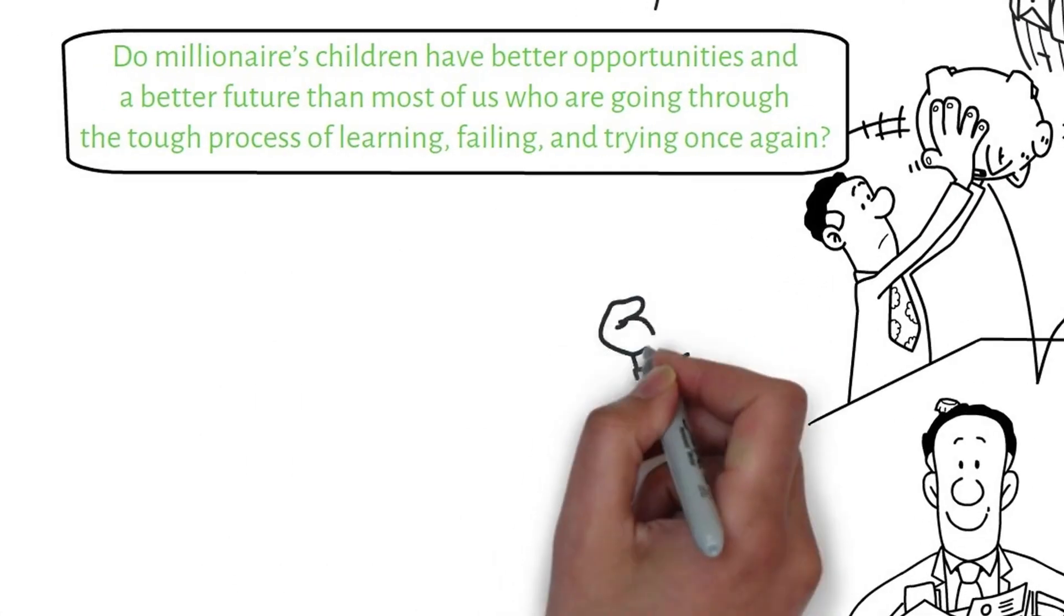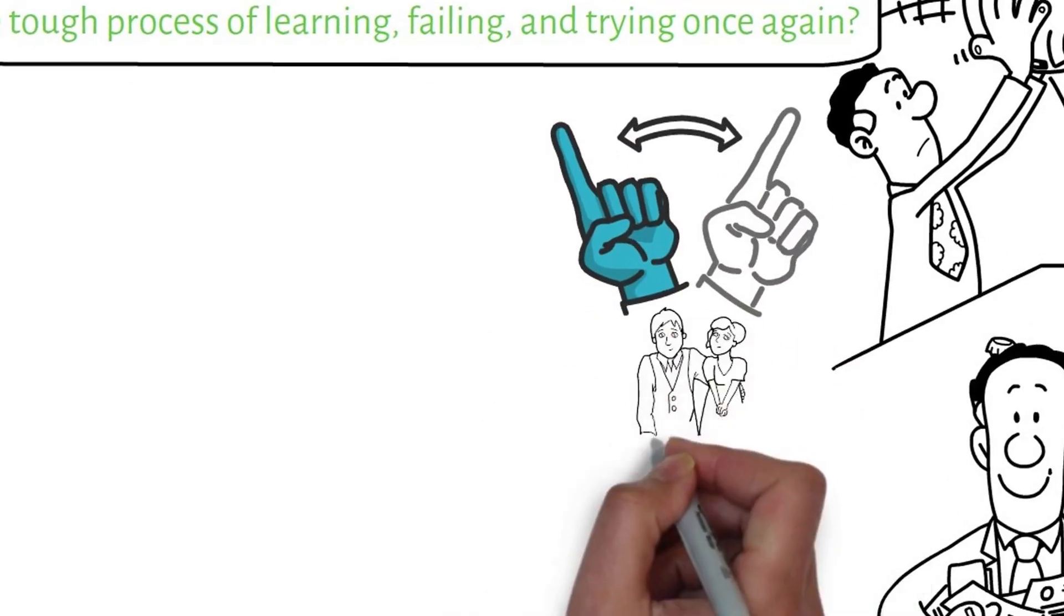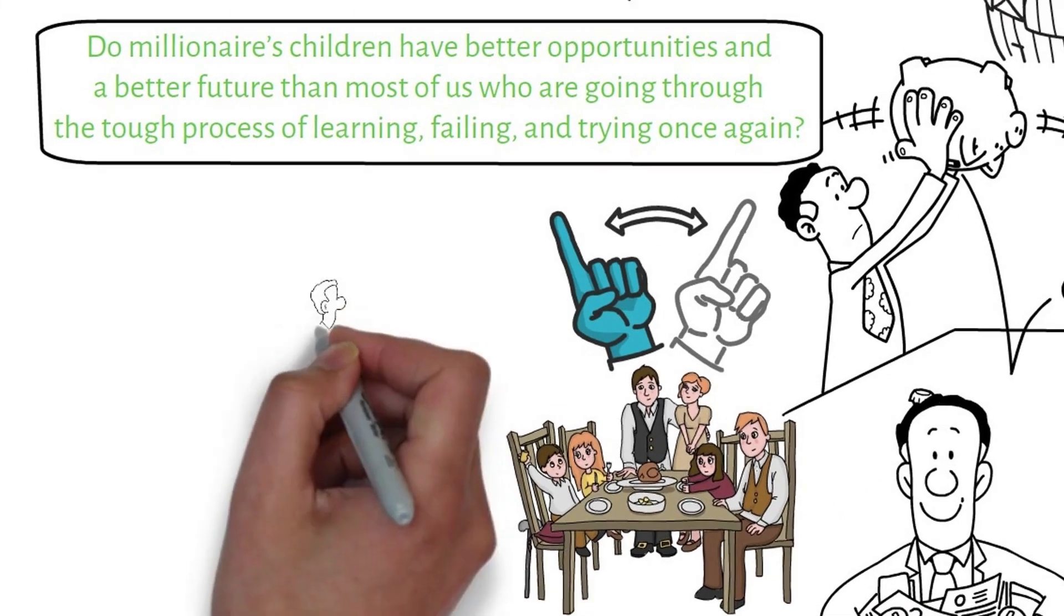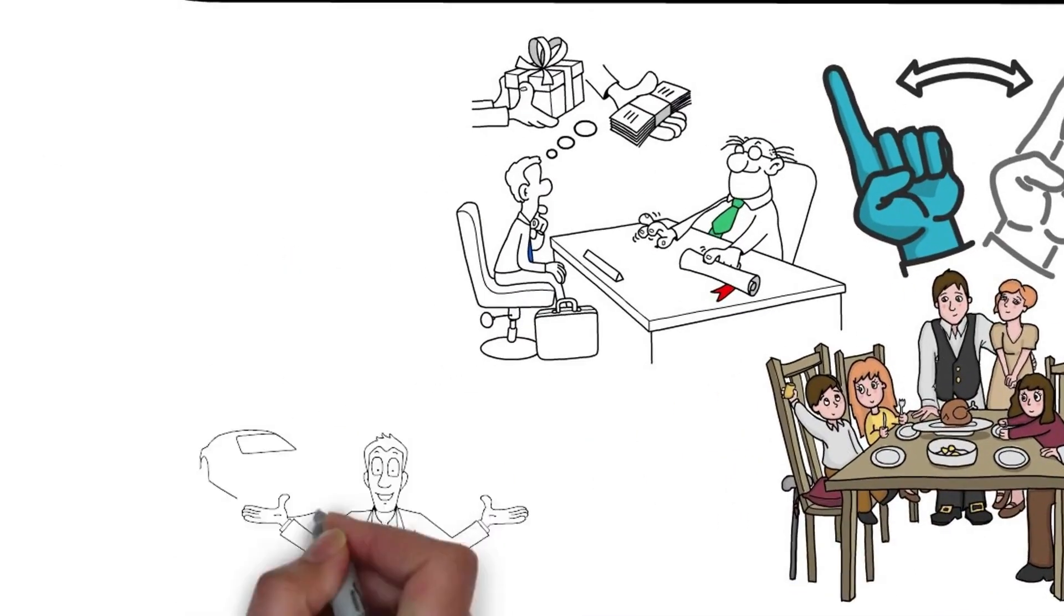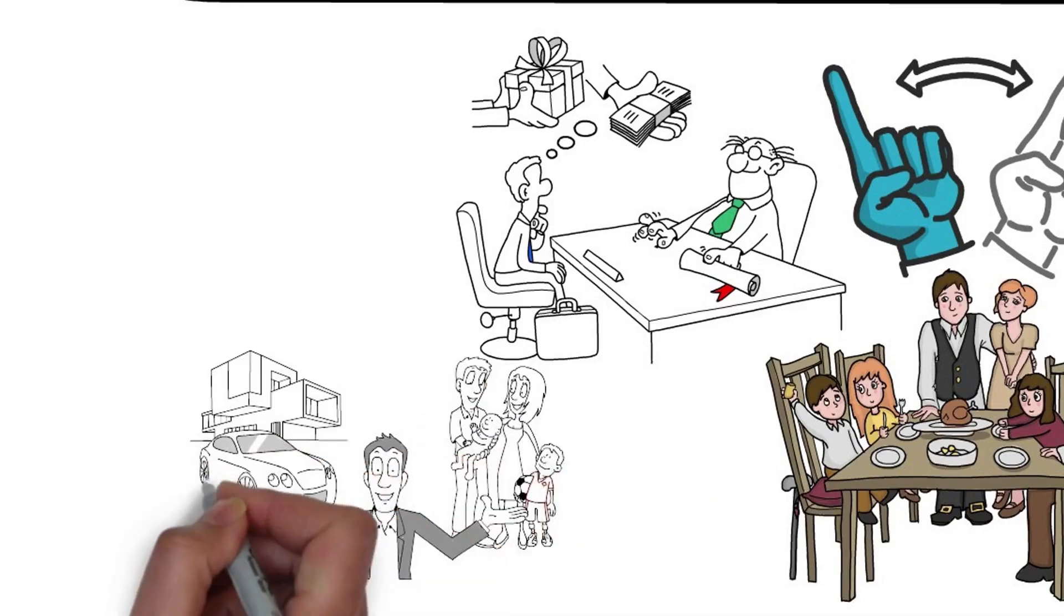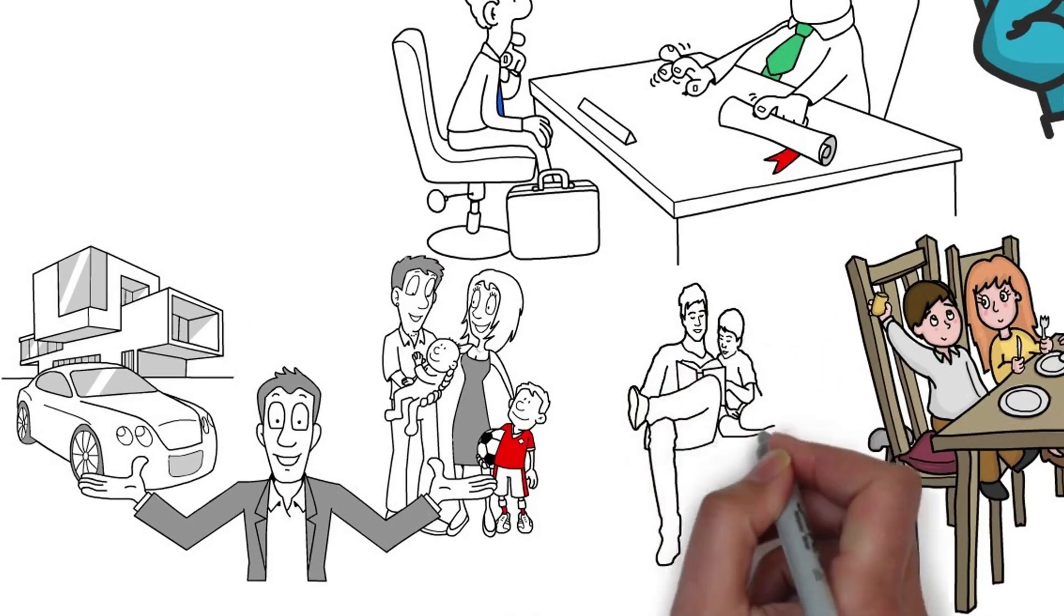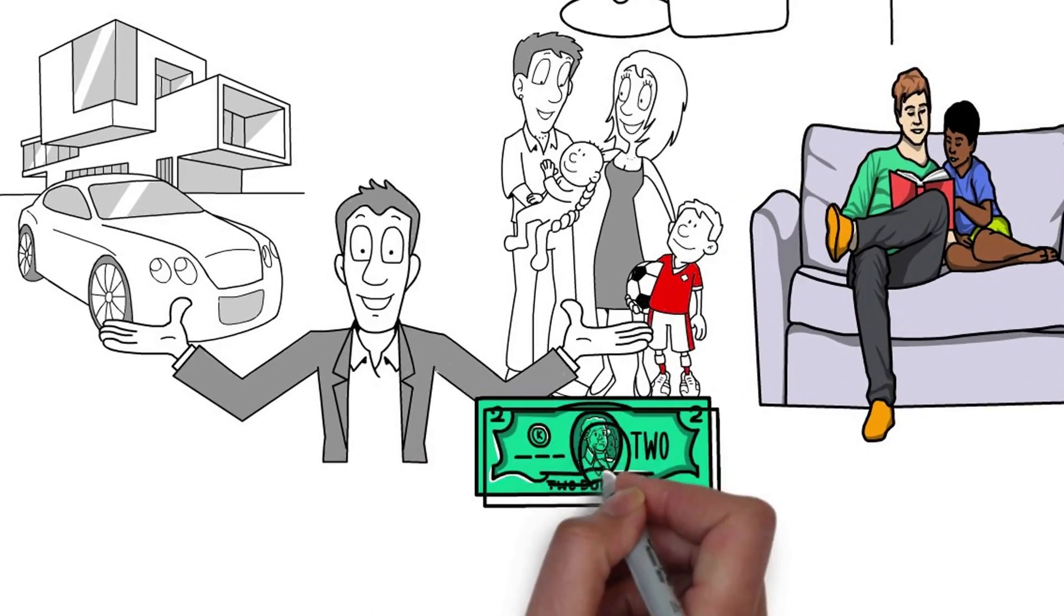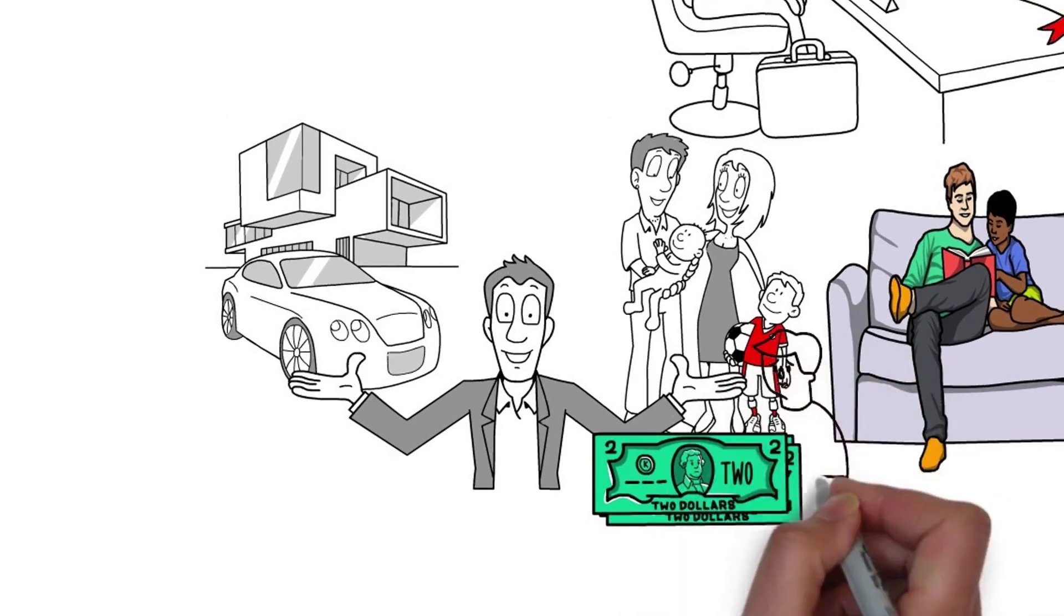It is easier to think that these children already have their future figured out just because their parents are sharing their wealth with them. When millionaires share their wealth with their children, it would greatly affect their children's view on money. Self-made millionaires often know how it was like to learn and struggle. That is why they want to share their knowledge to their children, not their wealth. If they carelessly give money to their children, they would think that money is easy to acquire and spend, thus becoming financially dependent.